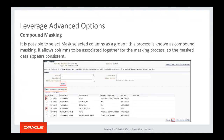Compound masking, also known as the grouping option, enables you to mask related columns together as a group, ensuring that the masked data across related columns retains the same relationship. The columns being masked as a group must all belong to the same table. You can use deterministic substitution, random substitution, shuffle, or user-defined functions for compound masking.